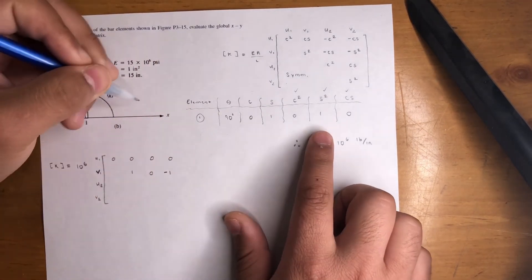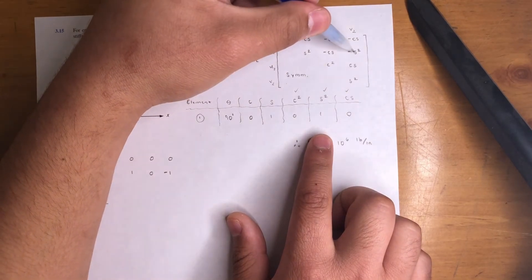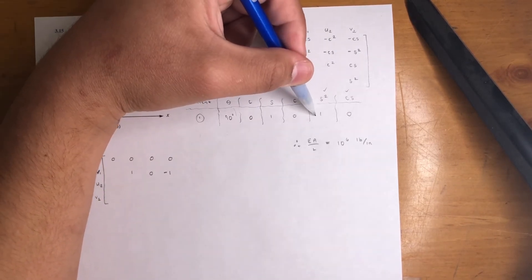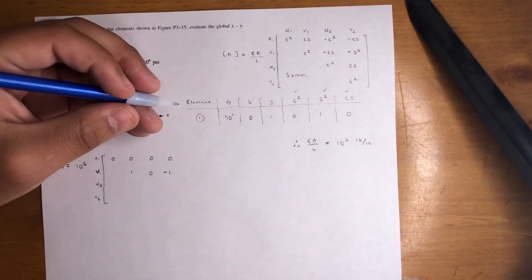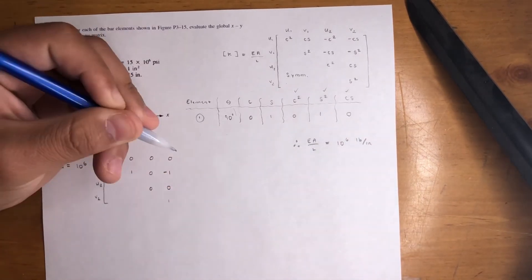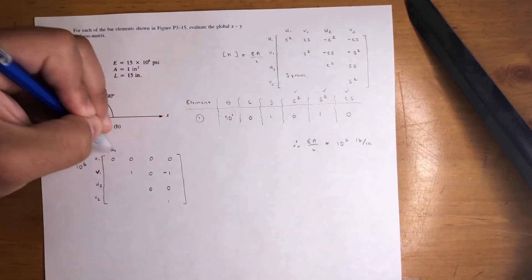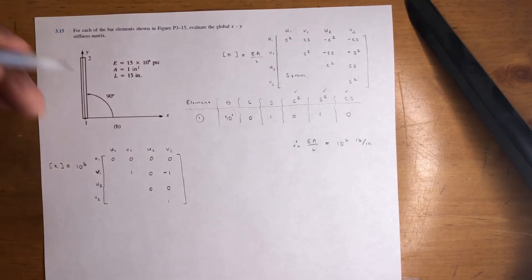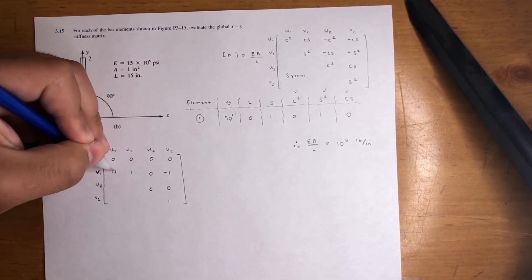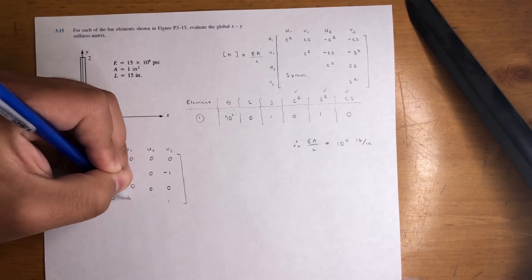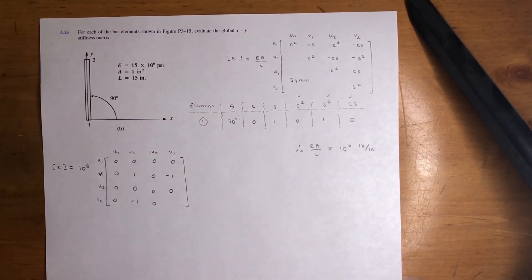Don't get confused — a negative sign here counteracts whatever sign is in the formula. Next entry: cosine squared and CS are both zero, and finally sine squared is one. The nodes are u1, v1 — the x and y components of node one — and u2, v2. Since it's symmetrical, you mirror the values across. The off-diagonal terms fill in as zeros, and the negative one appears in the appropriate position. That's pretty much the answer — not too crazy, though these problems can get more complex.